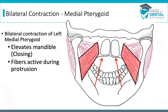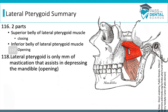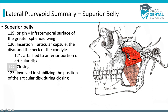Now we're moving on to the lateral pterygoid muscle, which is broken down into two parts: a superior belly and an inferior belly. This muscle is very unique because it's the only muscle of mastication that's involved in opening. The superior belly is involved in closing, and the inferior belly is involved in opening the mouth. They can also use 'depress the mandible' as a confusing way to say open the mouth.